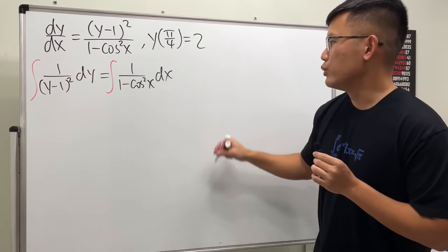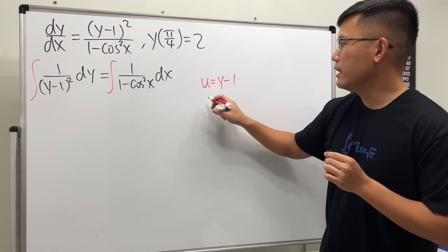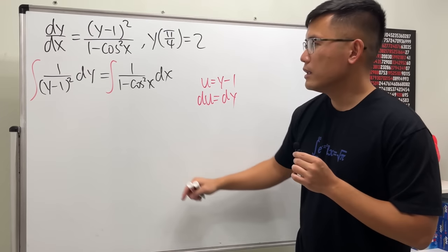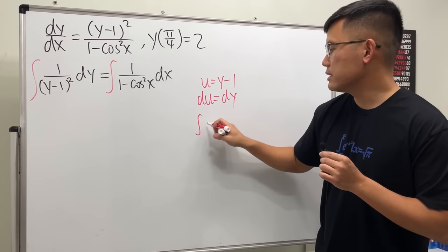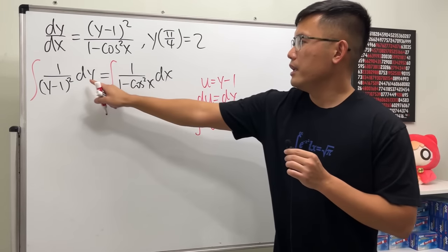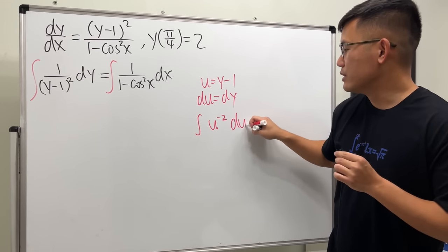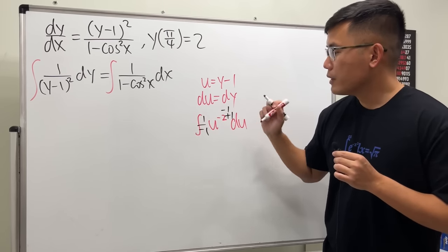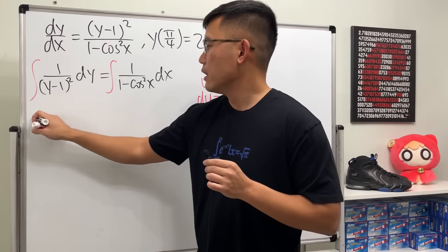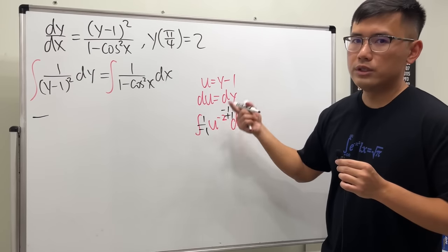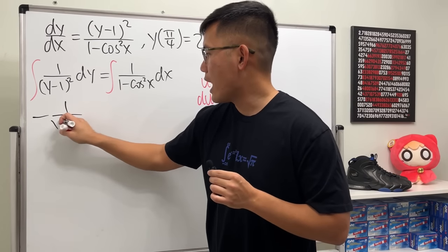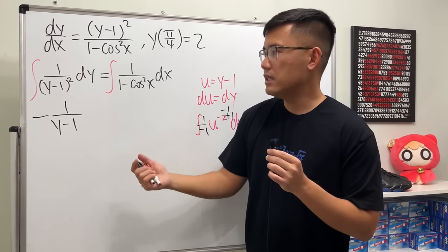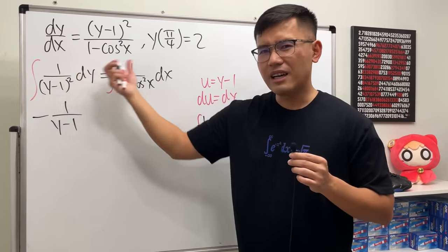To integrate the left side, do a u-substitution: let u = y-1, then du = dy. So we integrate 1/u², which is the same as u to the negative 2. Using the reverse power rule, add 1 to the power and divide by the new power, we get negative 1 times u to the negative 1, which is the same as -1/(y-1). You don't have to put a plus C on the left because we have integrals on both sides and we can consolidate the constants to the right.